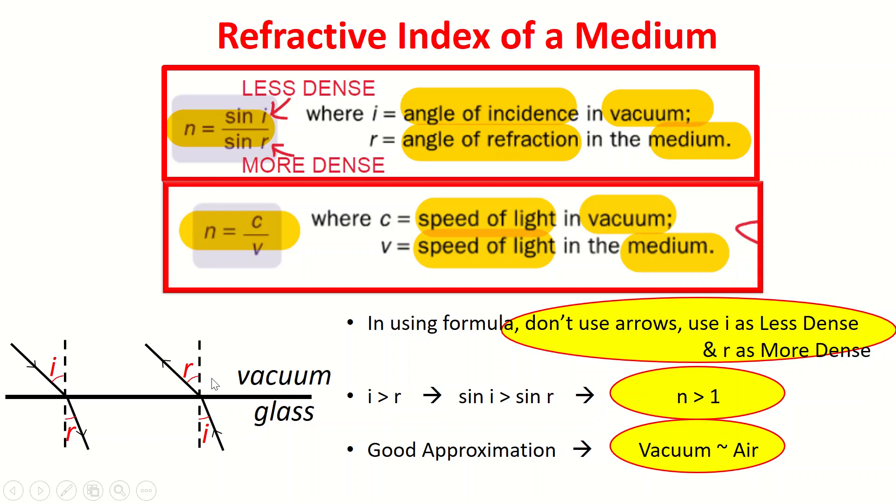That's right, it's actually the other way around, it's actually sine r over sine i because I want to look at angle of incidence. You notice the angle, don't worry about the reflection, basically the angle must be in the vacuum. So actually why is this like that?